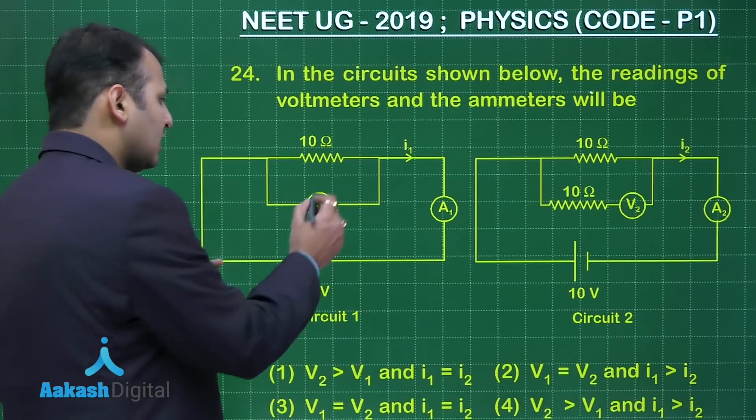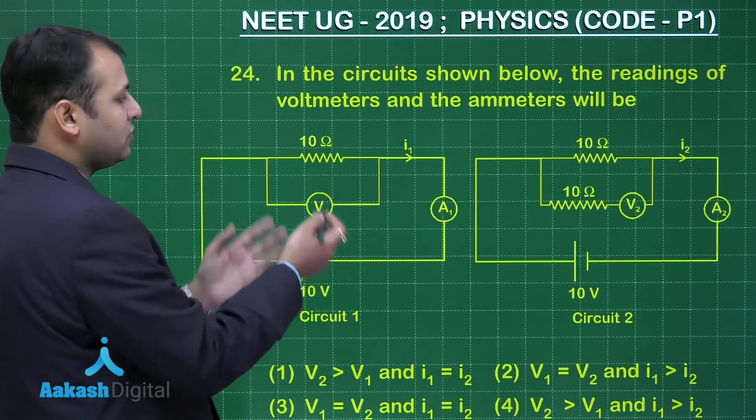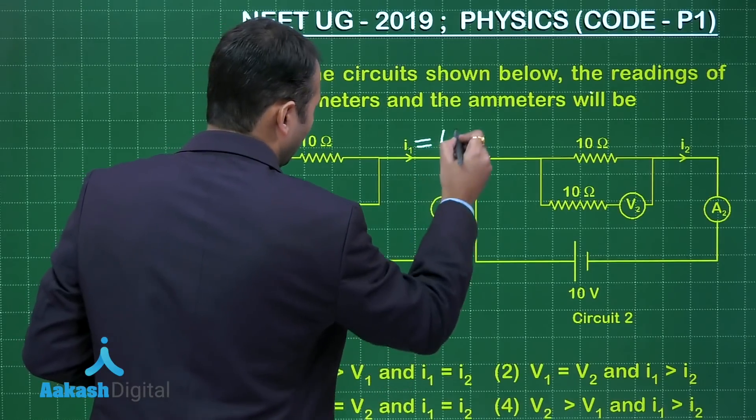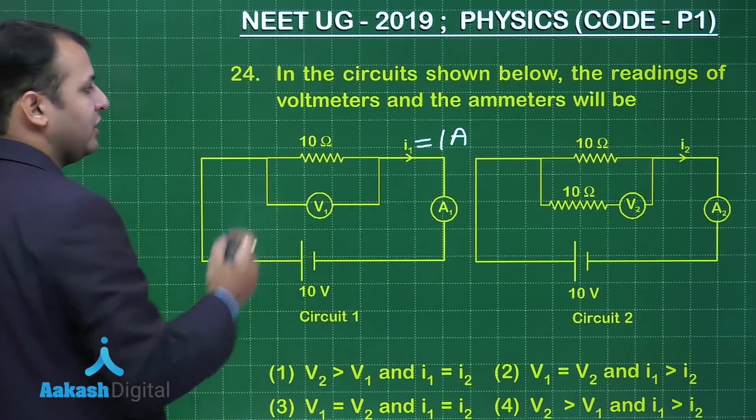Now in this case, the very first case, here if you see the net resistance of the circuit would be 10 ohm. So current I1 will be equal to 1 ampere, that is 10 volt supply divided by 10.